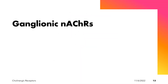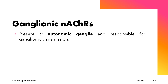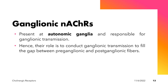The ganglionic nicotinic acetylcholine receptors are present at the autonomic ganglia and are responsible for ganglionic transmission. When present in the sympathetic ganglia, they are responsible for adrenergic neurotransmission; when present in the parasympathetic ganglia, they are responsible for cholinergic neurotransmission. Their role is to conduct ganglionic transmission to bridge the gap between the pre- and post-ganglionic fibers.